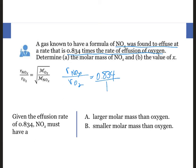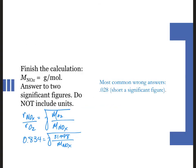So you see that O2 is going to be moving faster than NOx, which is moving slower. It's only moving at a fraction of the speed of O2. So given the effusion rate of 0.834, because we know heavier things move slower, we know that NOx must have a larger molar mass than oxygen.